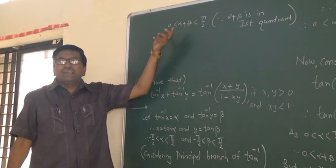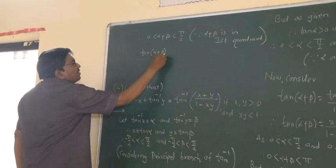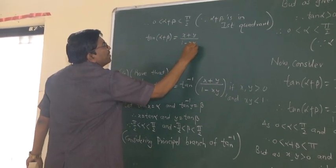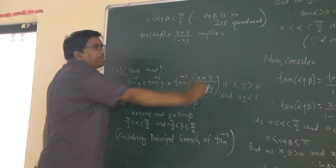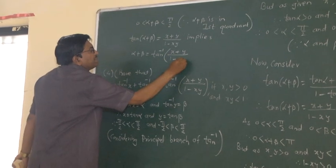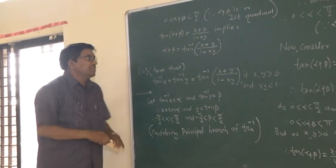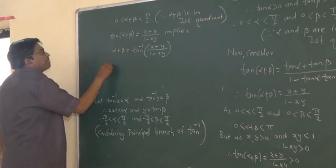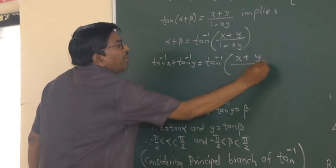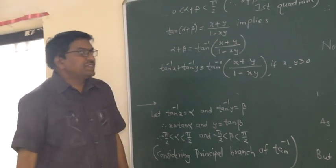Therefore, tan(alpha plus beta) equals x plus y upon 1 minus x times y. Now, alpha means tan inverse x, and beta means tan inverse y. Therefore, tan inverse x plus tan inverse y equals tan inverse of (x plus y upon 1 minus x times y), in the case where x and y are positive and x times y is less than 1.